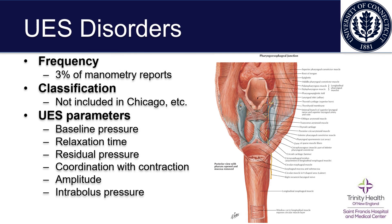The frequency of upper esophageal sphincter disorders is around 3% of all manometry reports in patients sent for manometry for other indications. Unfortunately, there is not a great classification system for these disorders — it is not specifically included in the Chicago Classification or others at this time.